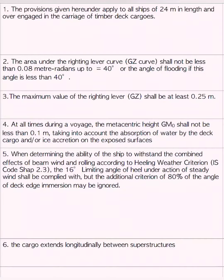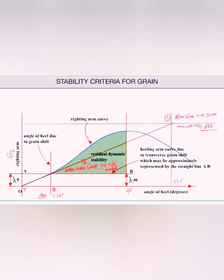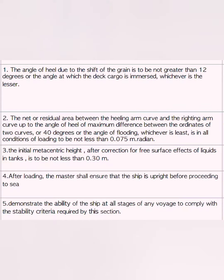Let's talk about the stability criteria for grain. The key difference between a normal ship and a grain carrier is that grain has the tendency to shift, which reduces the GM of the ship. So all the stability criteria is based on this. The GZ curve for grain cargo is created after assuming there has been a grain shift, thus the area under the curve automatically reduces. Considering all this, the stability criteria is: the angle of heel due to the shift of grain is not to be greater than 12 degrees, or the angle at which deck cargo is immersed, whichever is lesser.